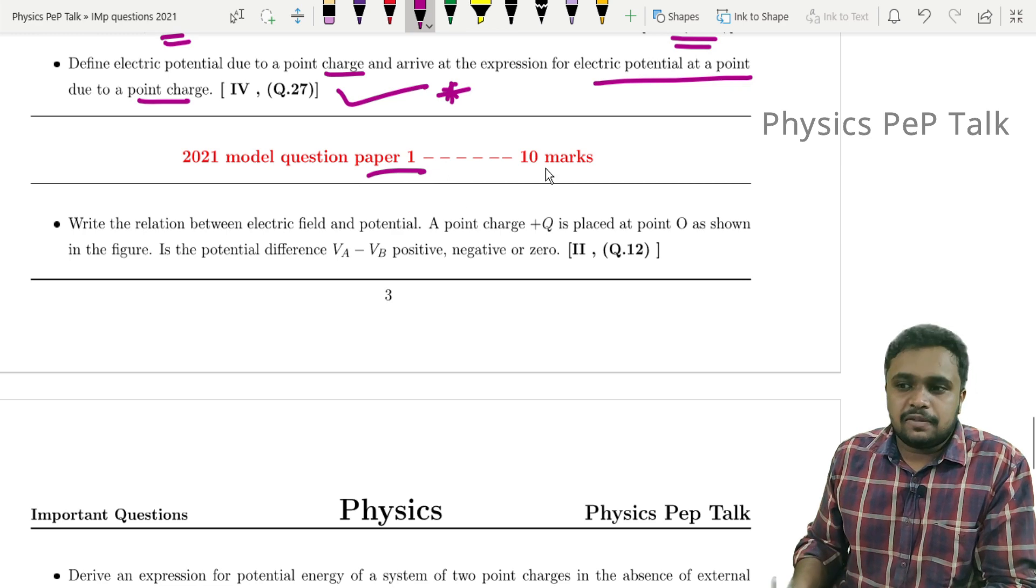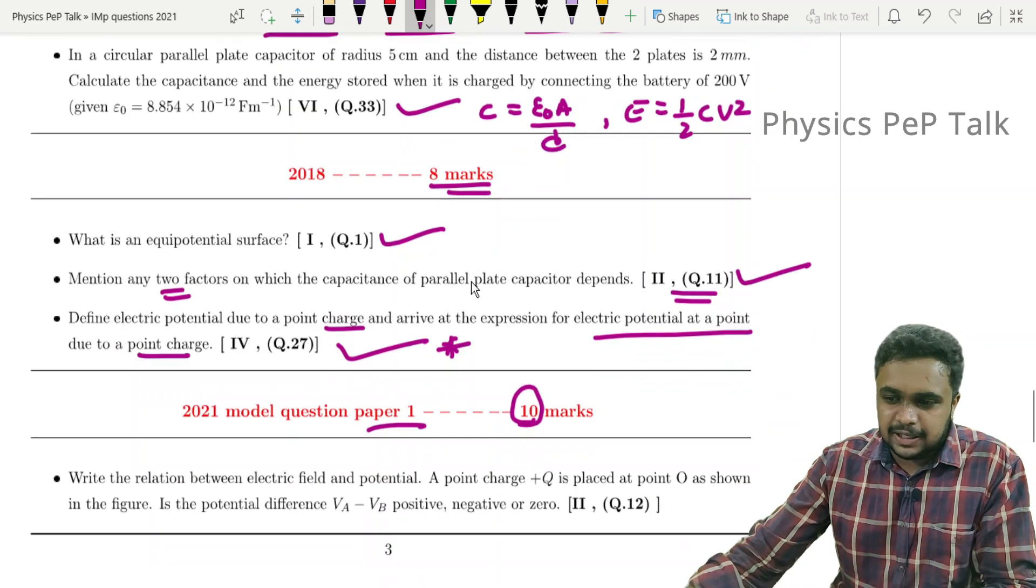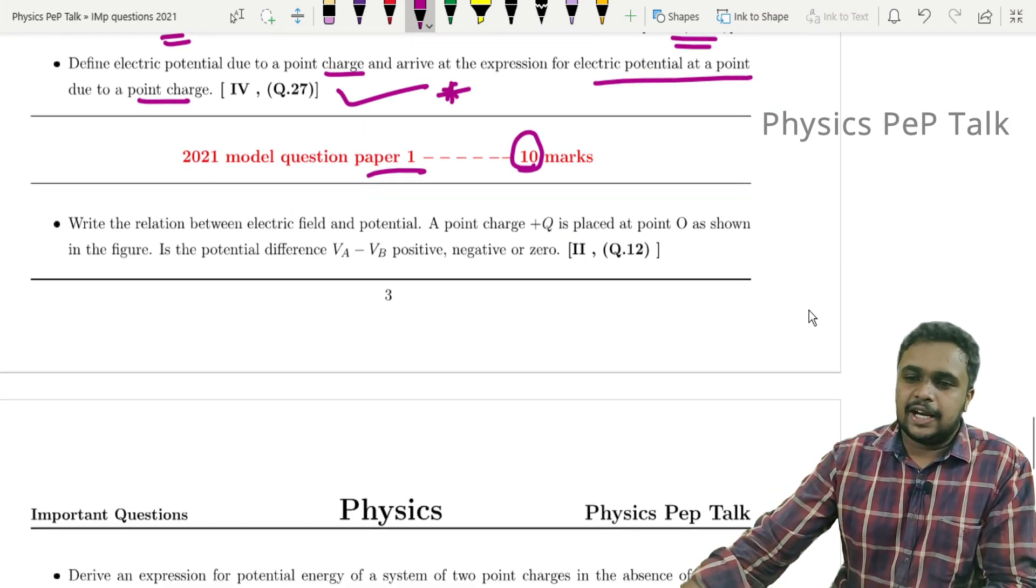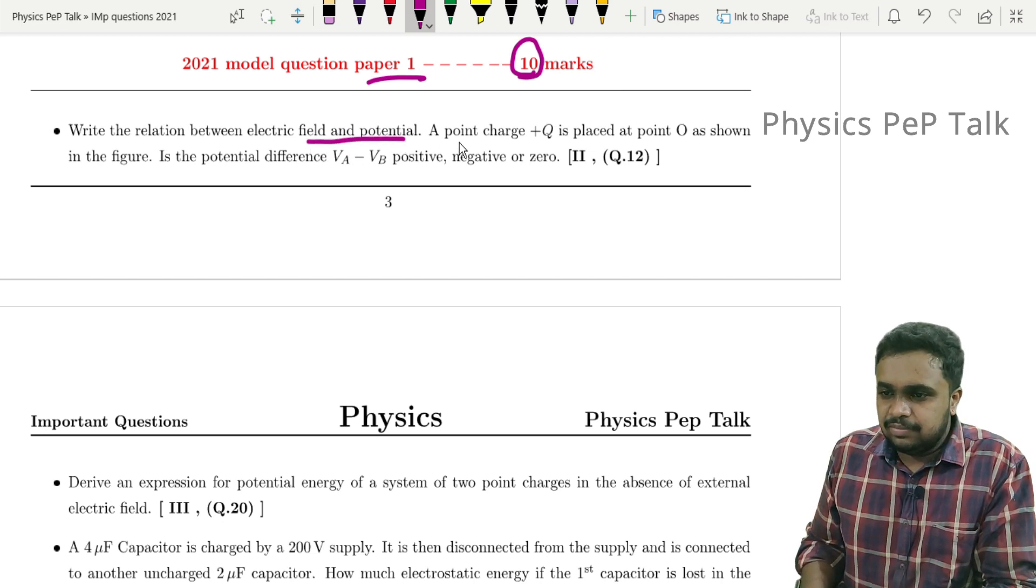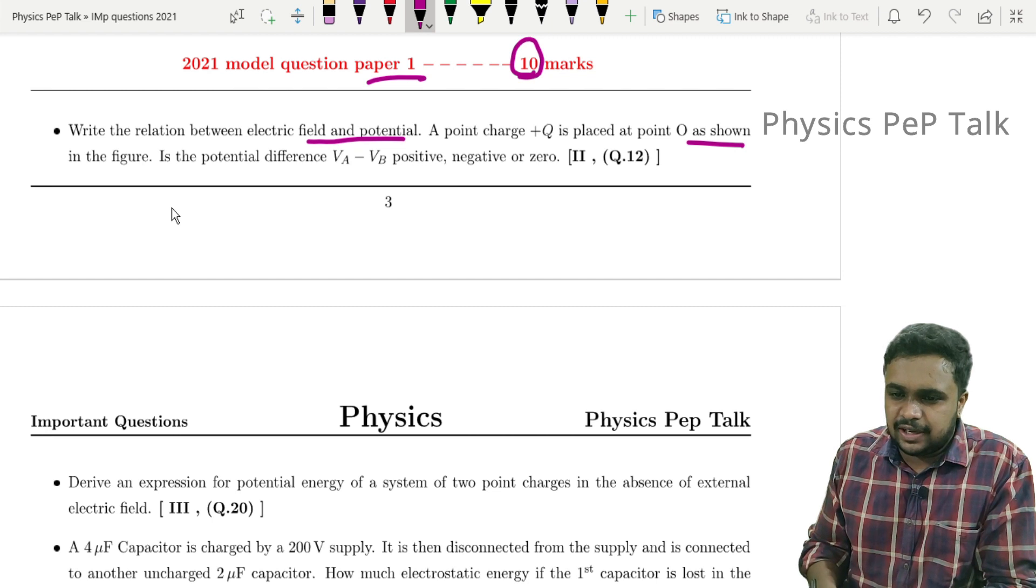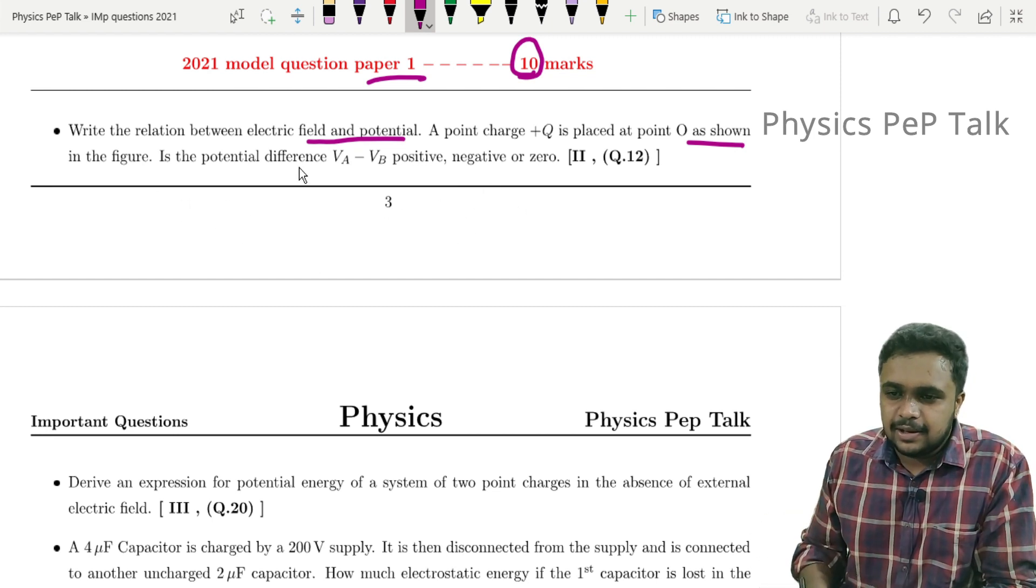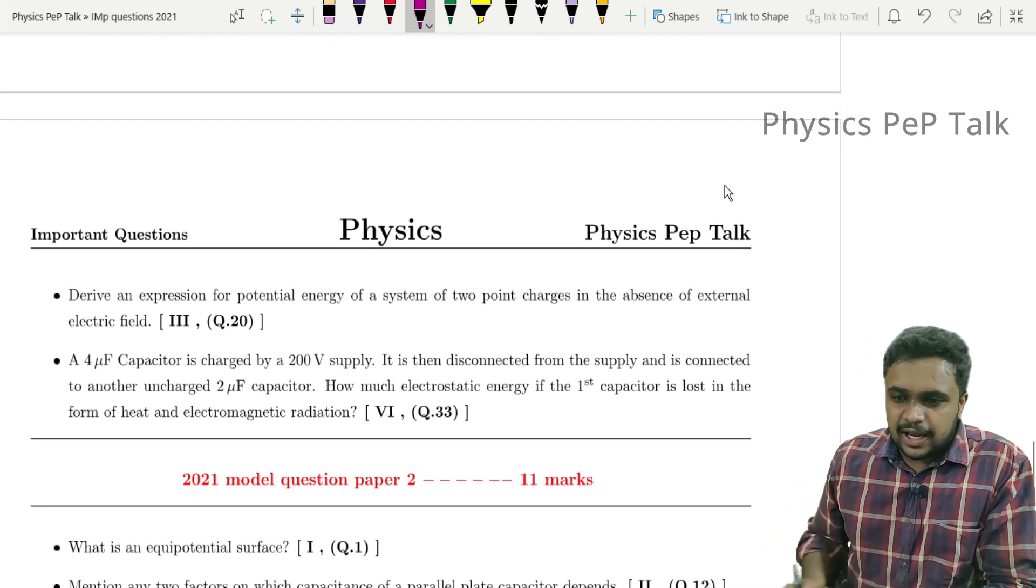Now Model Paper 1 has 10 marks from this chapter. Model Paper 1 has 10 marks - this model paper has more marks compared to all other papers. Write the relation between electric field and potential. A point charge +q is placed at point O as shown in the figure.